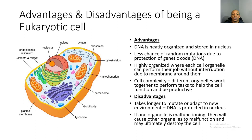Let's look at the advantages of eukaryotic cells. The DNA is neatly organized and stored in the nucleus, meaning there's less chance of random mutations due to protection of the genetic code. They are highly organized — each organelle can perform its job without interruption due to the membranes around them, allowing organelles to work and produce their products in peace. The cell complexity means different organelles work together like a team, each with a specific job to help the cell function effectively and efficiently.